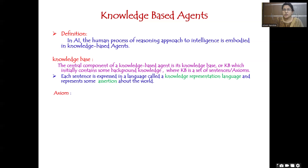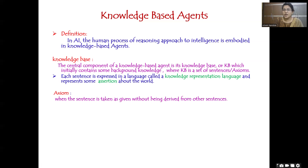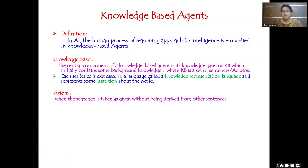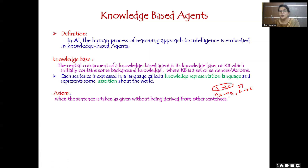Now let us see what is meant by an axiom. The sentences in the knowledge base can sometimes be called axioms. An axiom is a sentence that is taken as given without being derived from any other sentences. For example, if I have A tends to C, I derived that from A tends to B and B tends to C — so A tends to C is not an axiom. But A tends to B and B tends to C are two axioms, because they are basic statements that do not depend on any other sentence.